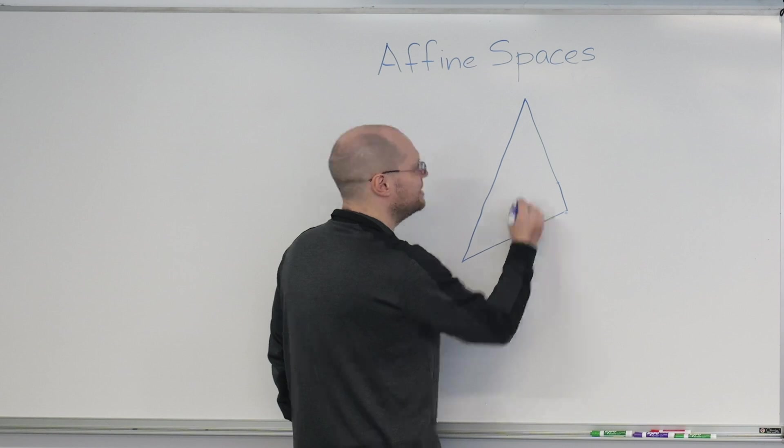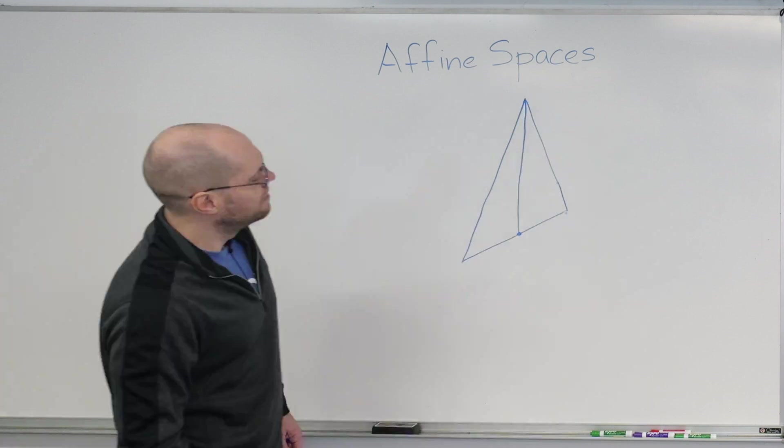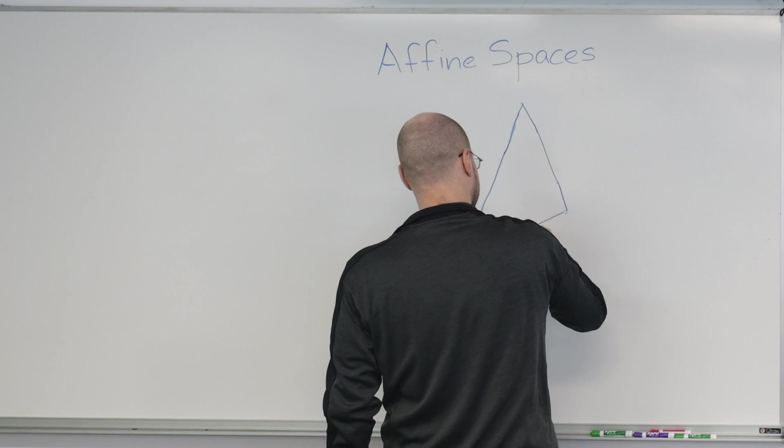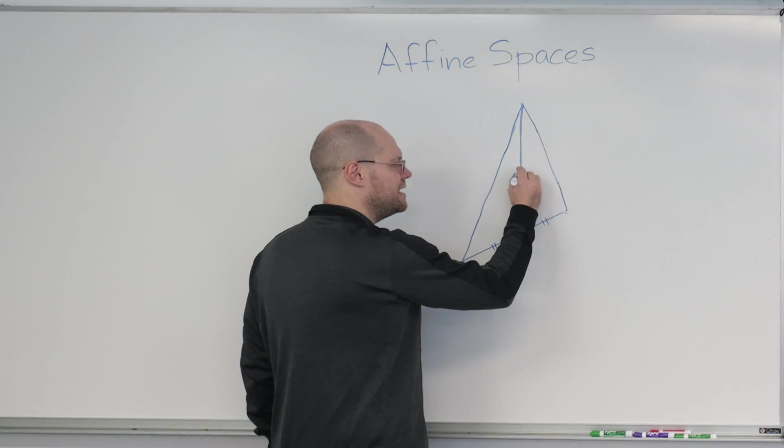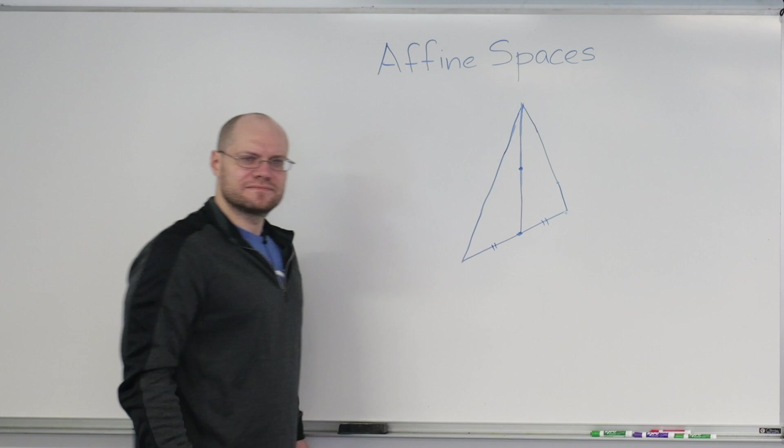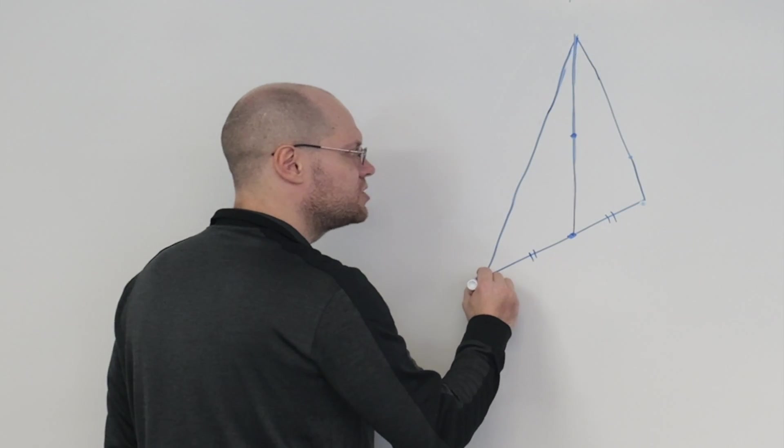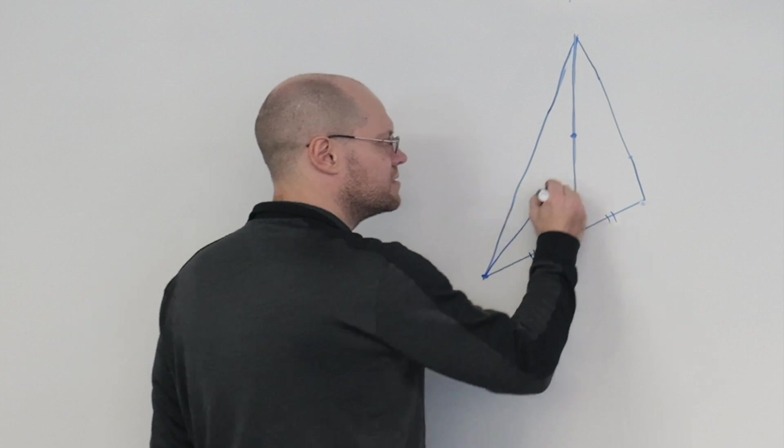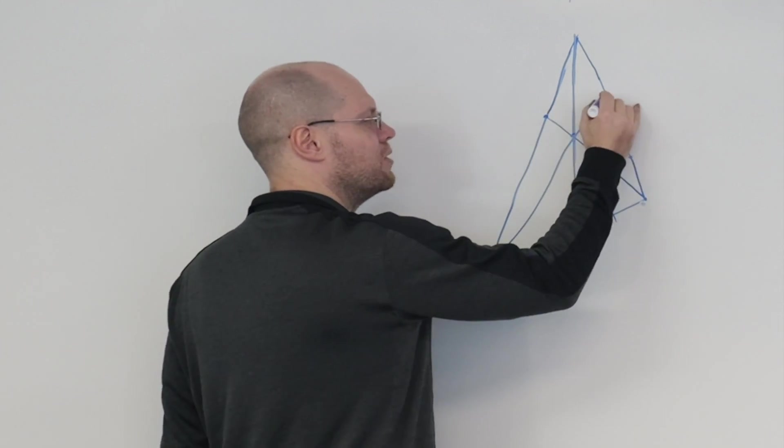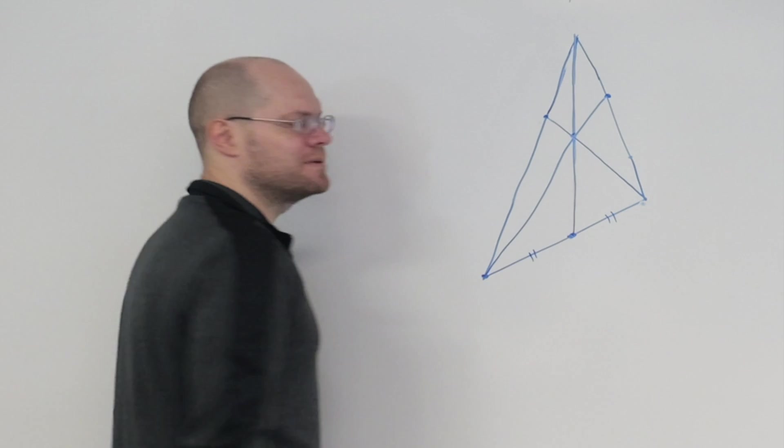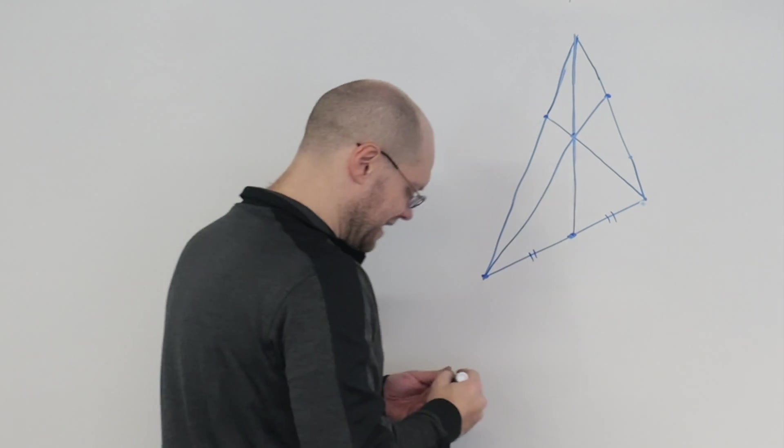Draw one median. Pick any point on the median. Draw segments from the two other vertices through that point. Find the two points where those segments intersect opposite sides and connect them.